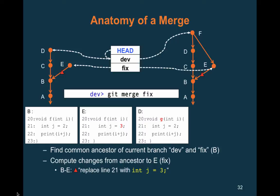From the common ancestor, Git computes one set of changes and then applies them on top of B — it takes 'replace line 21 with this' and applies that recipe on top of D, and obtains F. The change from D to F is exactly the change taken from B-to-E and applied on top.